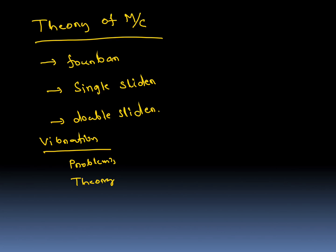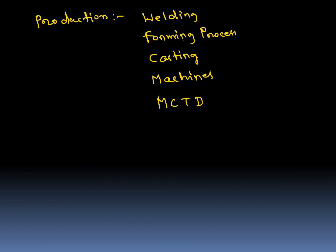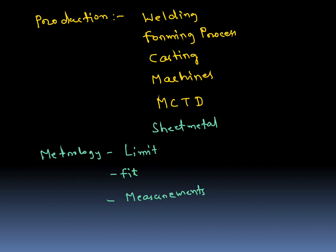In Production: maximum questions from welding — sometimes problems also based on welding. Forming processes: rolling, extrusion, casting. Then different machines: lathe, milling. Metal cutting and tool design, sheet metal operations and different types of sheet metal operations — punching formulas may be asked. In Metrology: limits, fits, different types of fits are very very important, plus measurement and angular and flatness measuring devices are also very very important.